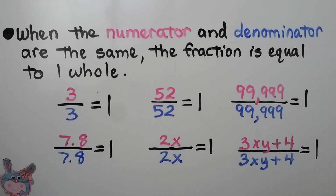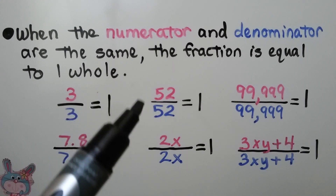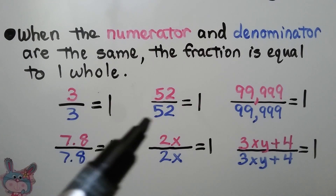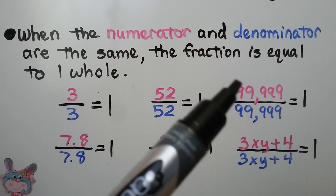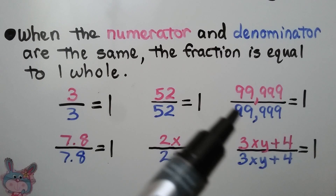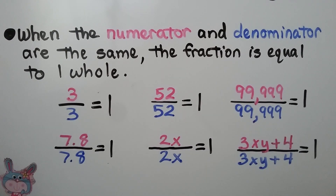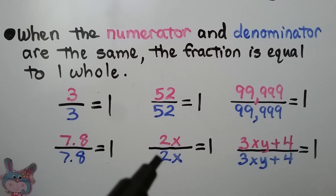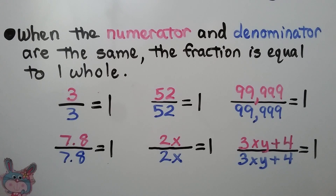When the numerator and denominator are the same, the fraction is equal to 1 whole. If we have 3 thirds, that's equal to 1 whole. Even if we have 52 fifty-seconds, that's equal to 1 whole — it doesn't matter how great the numerator and denominator are. If they're the same, it's equal to 1. That works with decimals and with variables in algebra. If the numerator and denominator are the same, the fraction is equal to 1 whole.